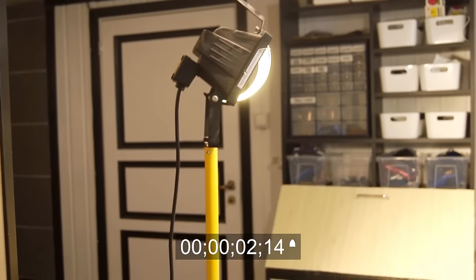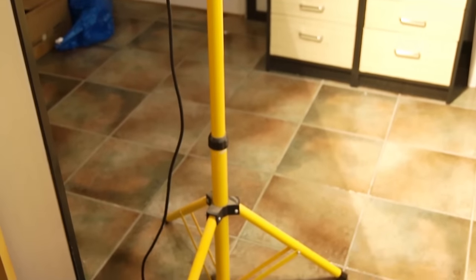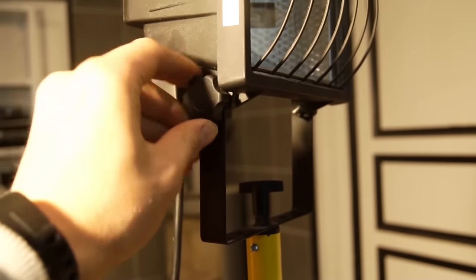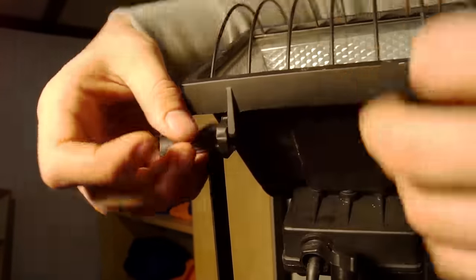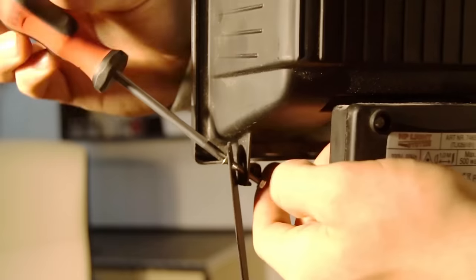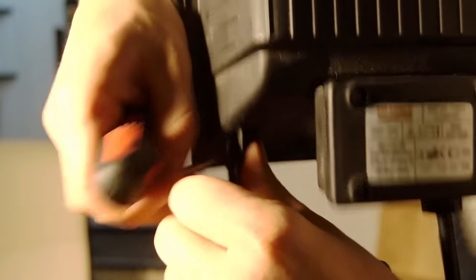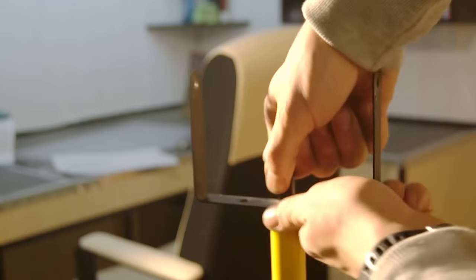My old work light has a very yellow tint to it and produces a lot of heat. I want to go over to something with a more neutral color and one that stays cool when I'm using it. Since I'm building a new light I need something like a tripod which it can stand on. I deconstructed my old work light and scavenged the tripod from it.